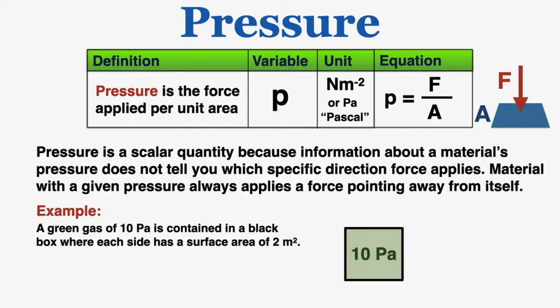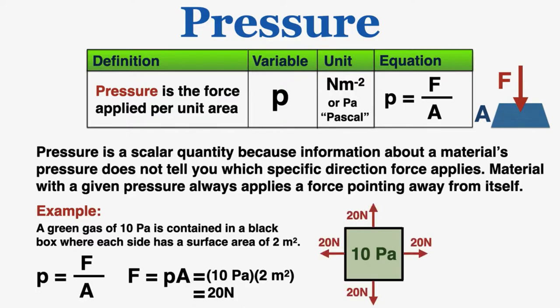As an example, we can imagine that this green gas is at 10 pascals of pressure, and it's contained in this black box where each side has a surface area of 2 meters squared. Because pressure equals force over area, the force applied by the pressure is equal to the pressure times the area. So because each side of the box has an area of 2 meters squared, the force on each side of the box is going to be 20 newtons. So the gas in this box is applying an outward force of 20 newtons on each individual surface of the box.